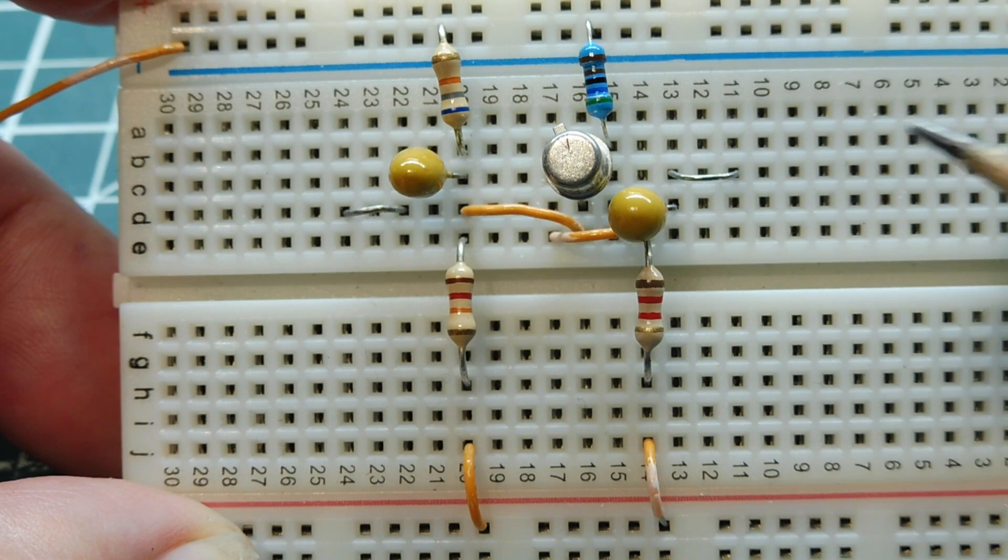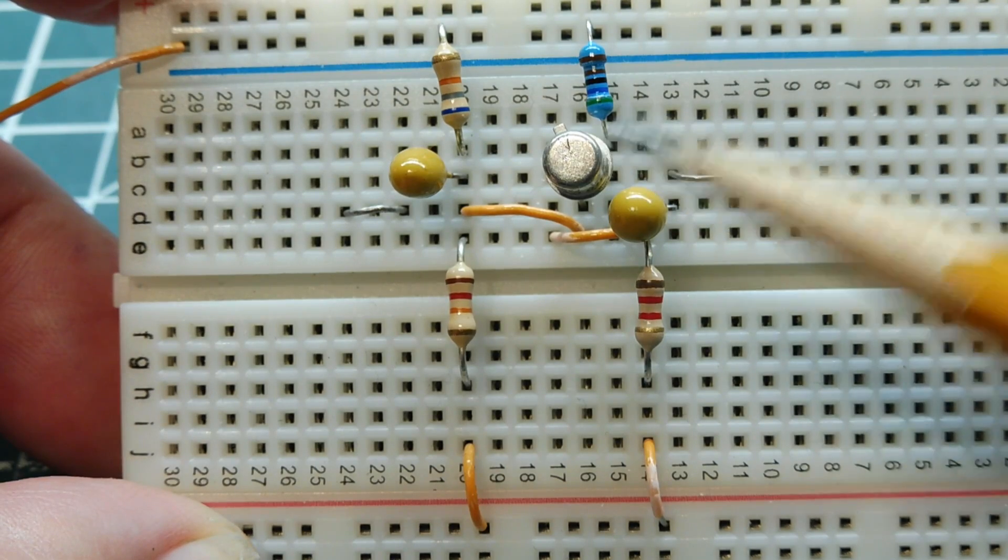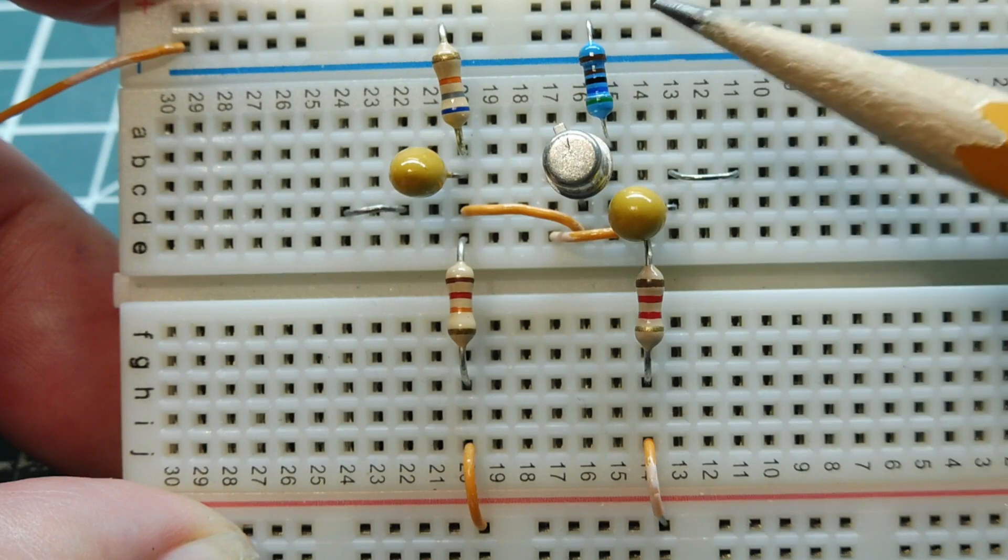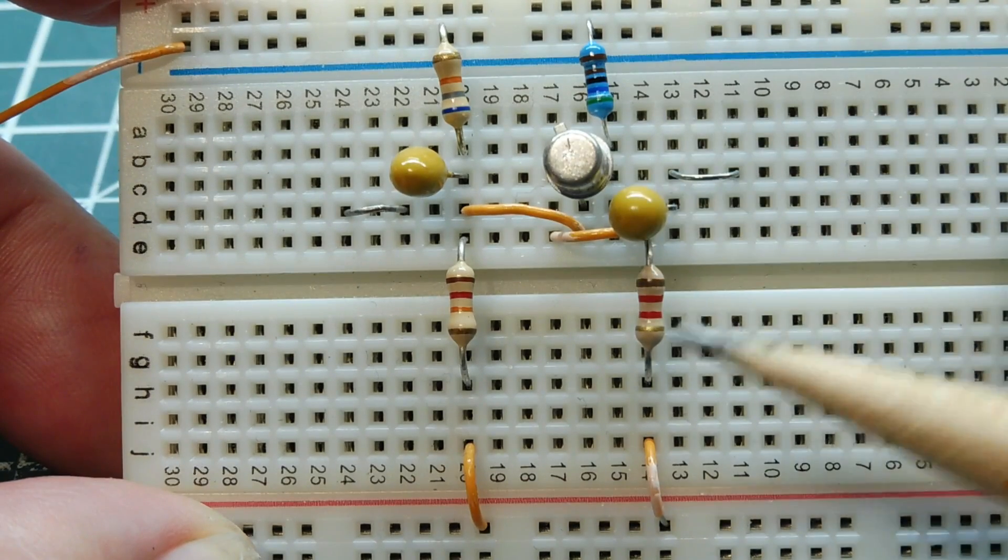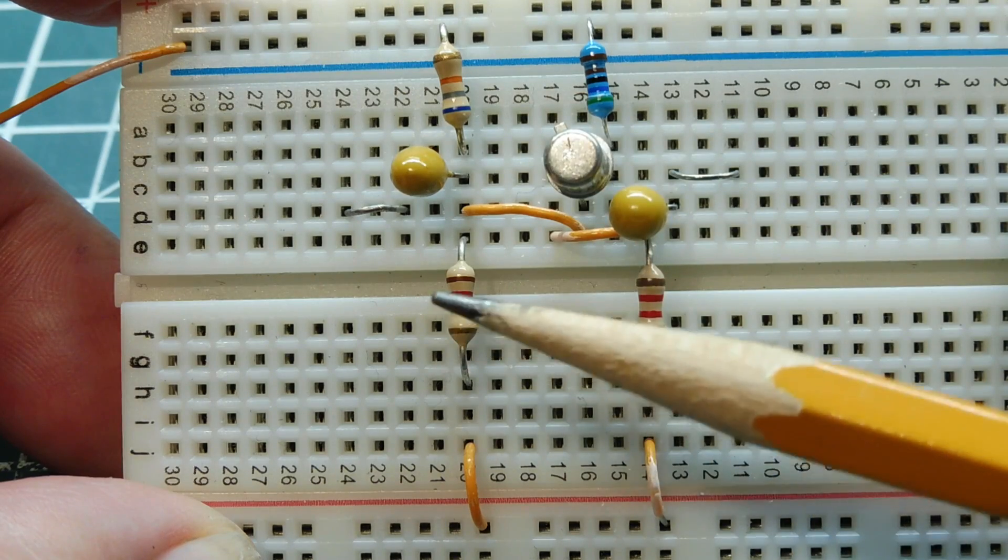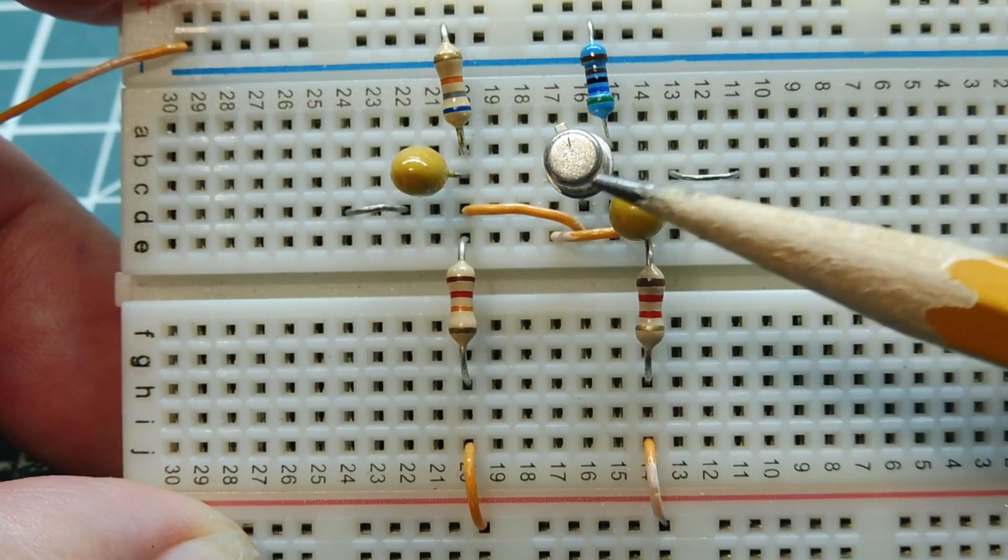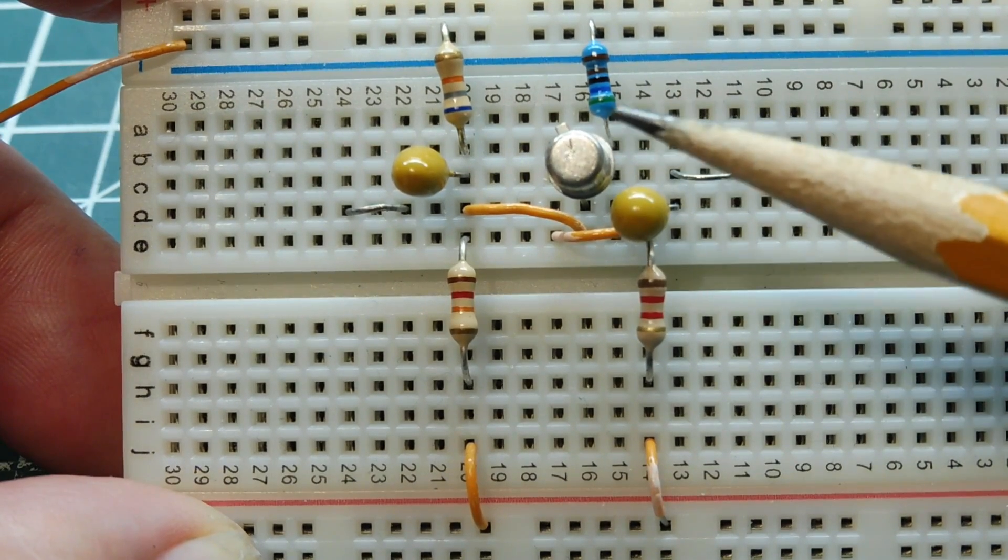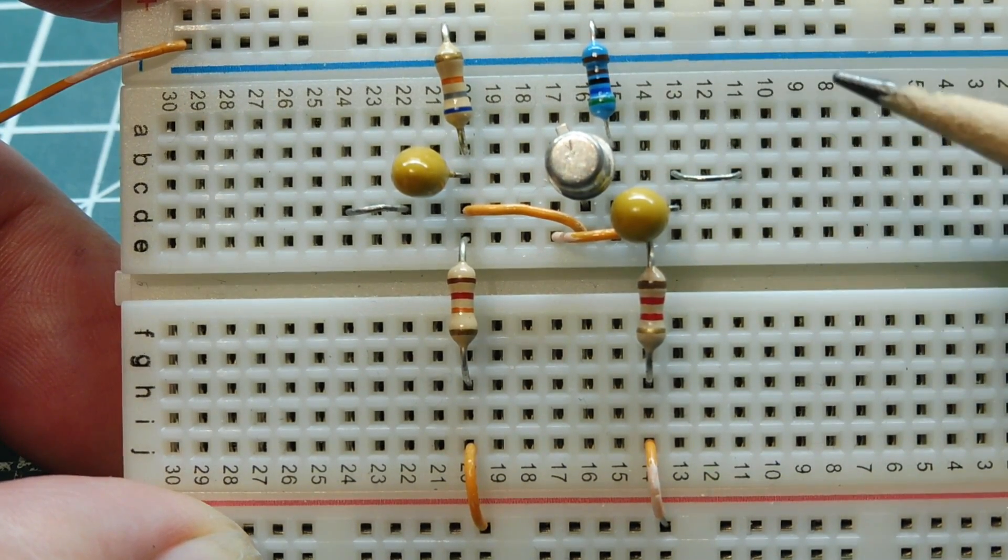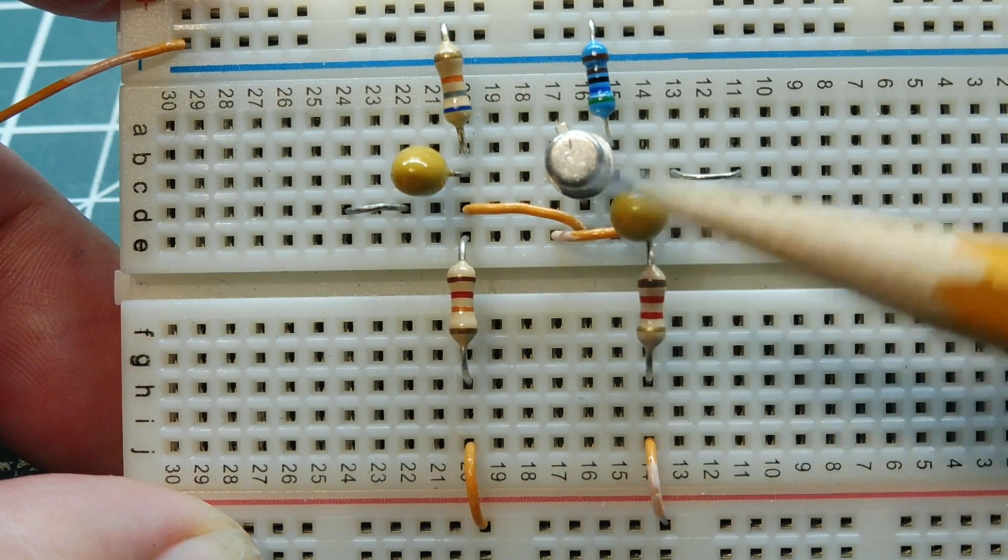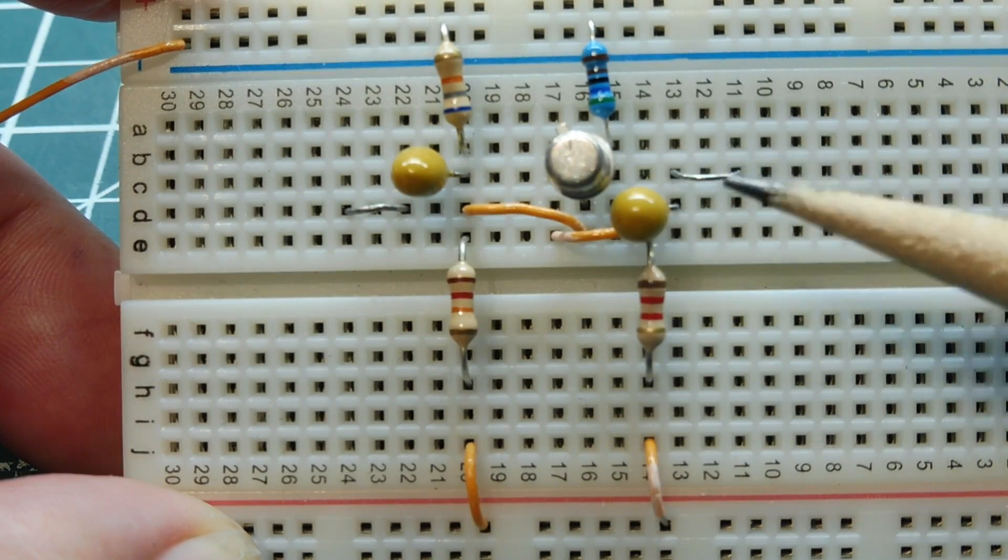Now the transistor we're going to use is a 2N2222 and these are the four bias resistors that we're going to calculate: RL is the load resistor, RE is the emitter resistor, and these two resistors are the bias voltage divider which will set the Q point or idle point of the transistor. So the Q point of the collector will be one half VCC, and the current through the transistor will be one half the collector saturation current.